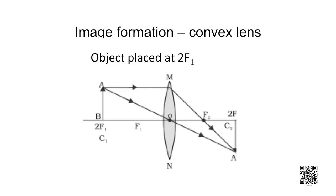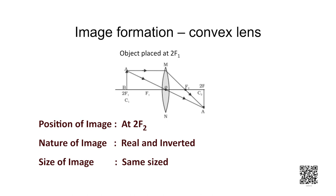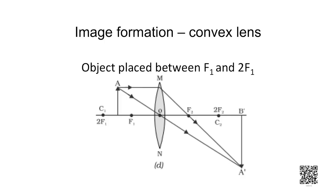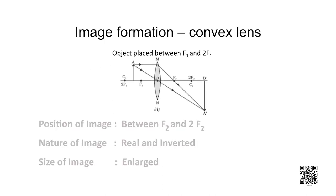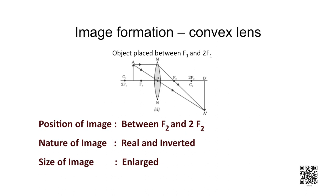When the object AB is placed at position 2f1, image formation is considered using two rays from the tip of the object. One ray is taken parallel to the principal axis, which after refraction passes through the focus on the other side. The other ray passes through the optical center and does not suffer any deviation. The two refracted rays actually meet at 2f2, forming a real, inverted, and same-sized image. Moving on, when the object AB is placed between f1 and 2f1, using the same set of incident rays, the image formed is real, inverted, and enlarged.